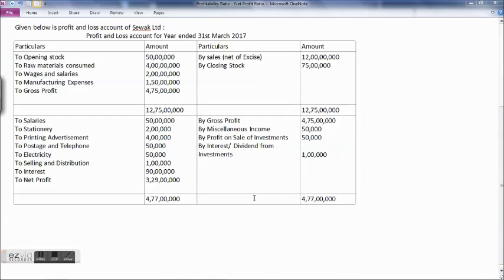On the debit side of the trading account we have: to opening stock 50 lakhs, to raw materials consumed 4 crores, to wages and salaries 2 crores, to manufacturing expenses 1 crore 50 lakhs, and to gross profit is 4 crores 75 lakhs. The same gross profit is carried down 4 crores 75 lakhs.